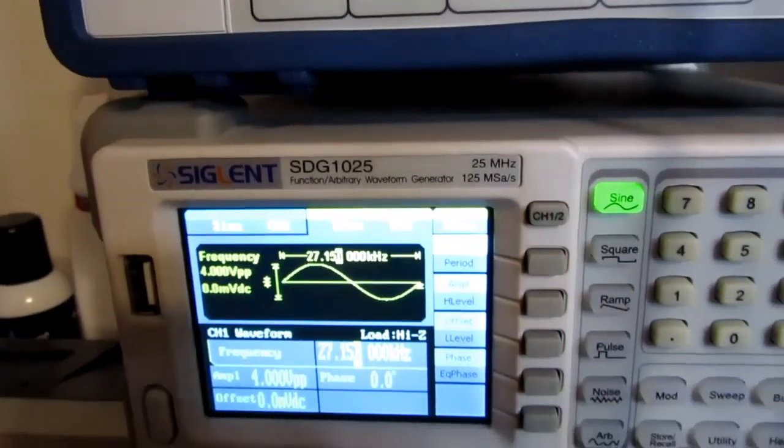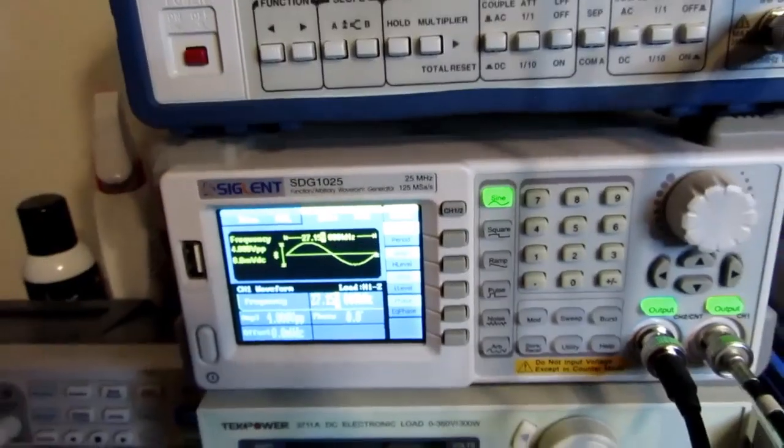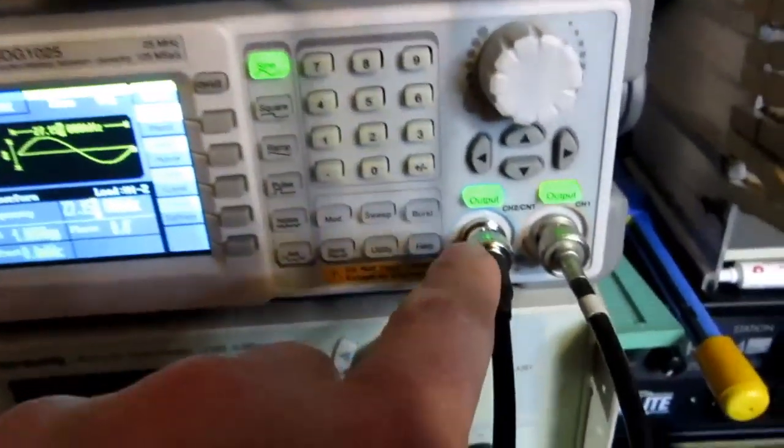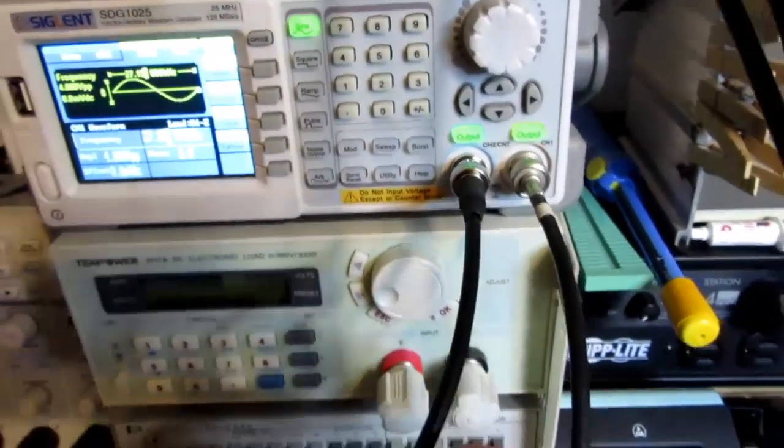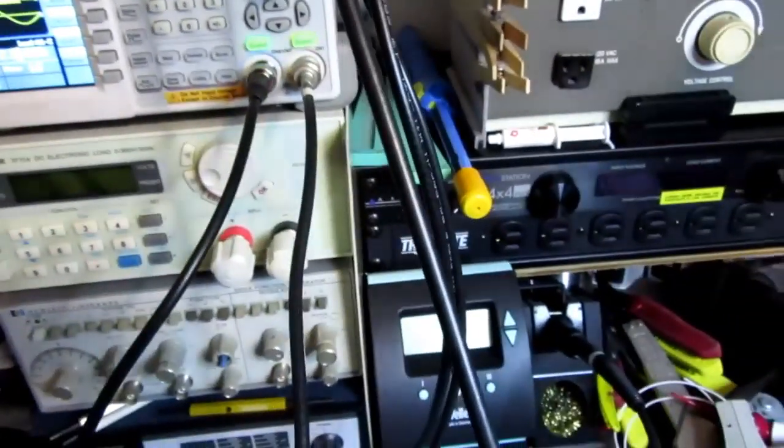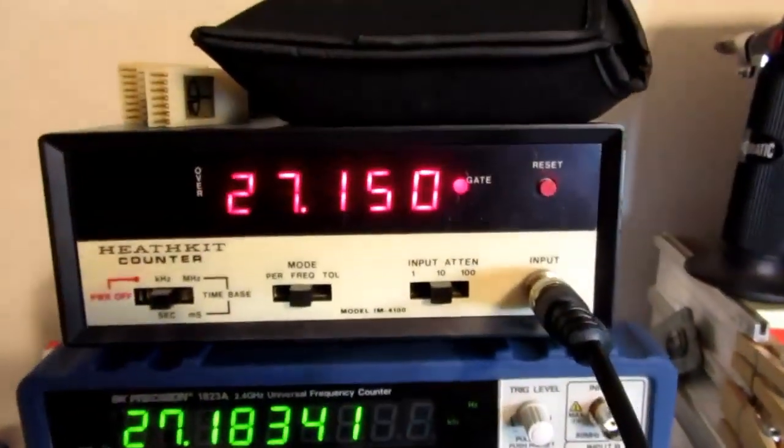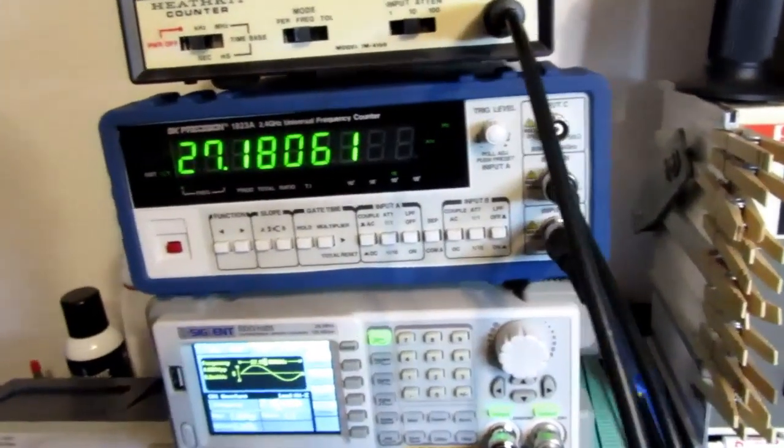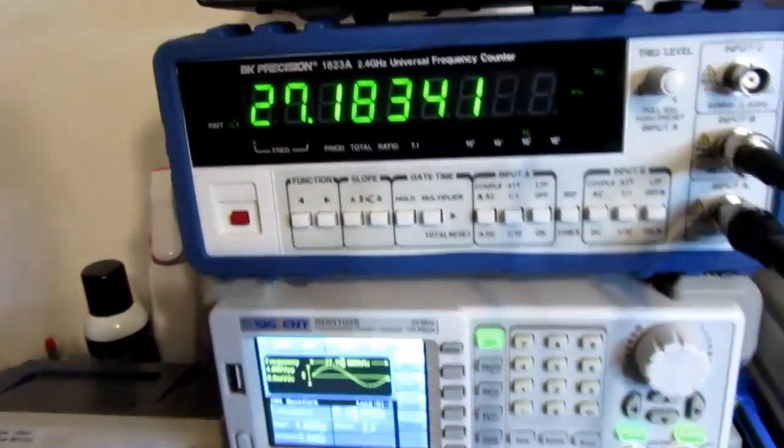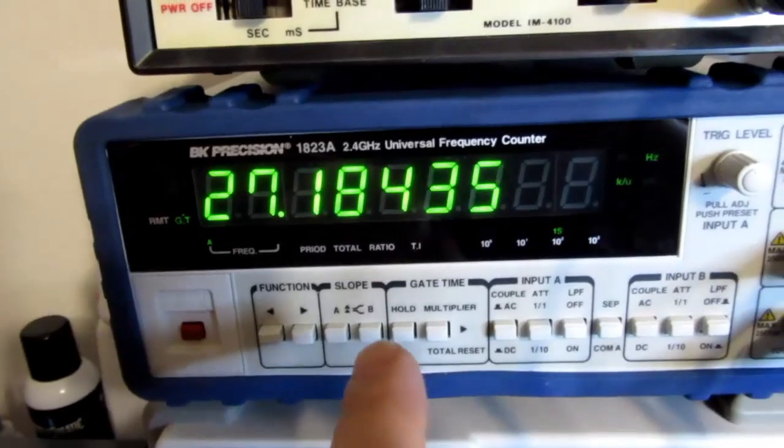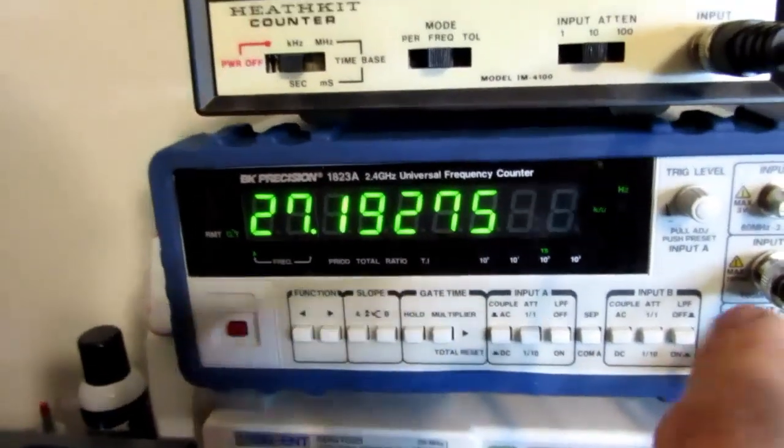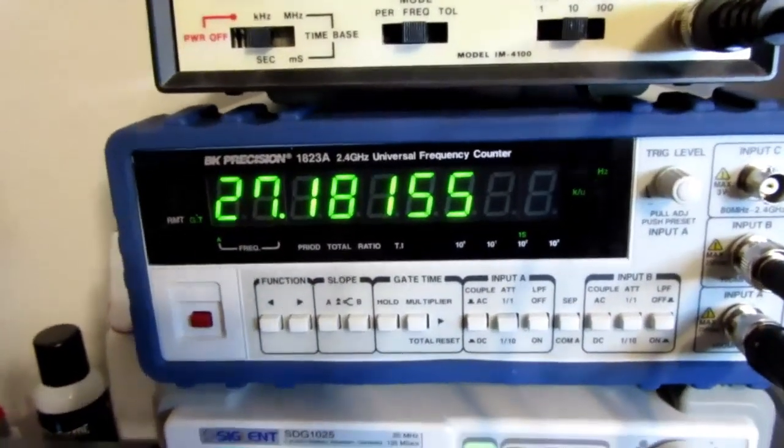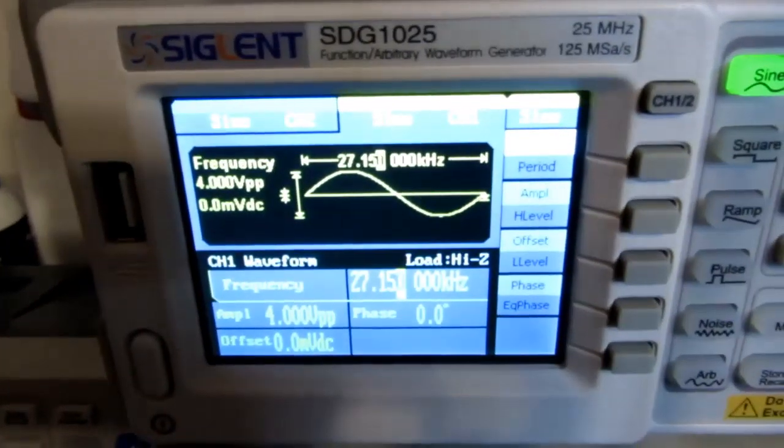So going to channel 1, they're both turned on at the moment and I've got channel 1 hooked up in parallel with my Heathkit frequency counter, and channel A on the BK is also monitoring that same point, so I've got 27.15.